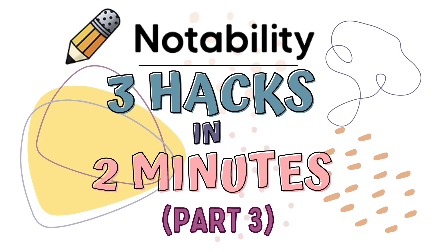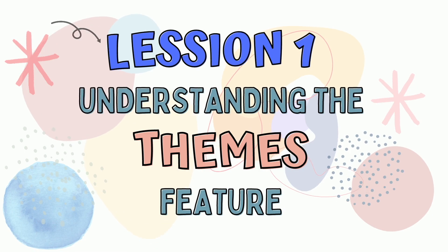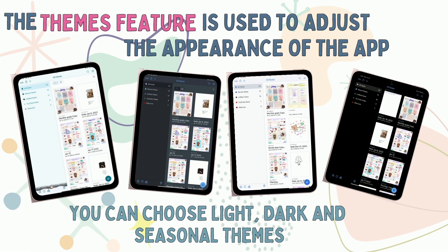Links in the description below. Lesson number one: understanding your themes feature. The themes feature in Notability allows you to adjust the appearance of the app. You can choose between light, dark, and even seasonal themes.